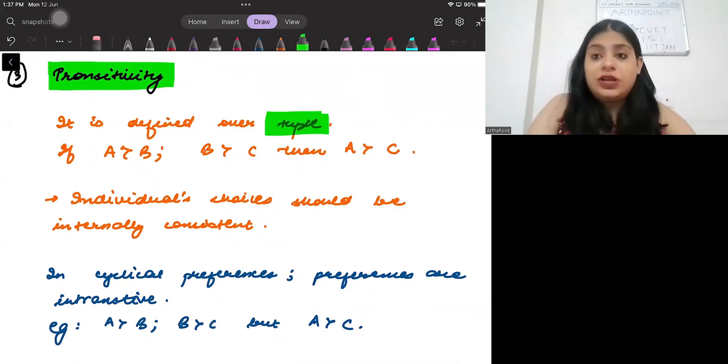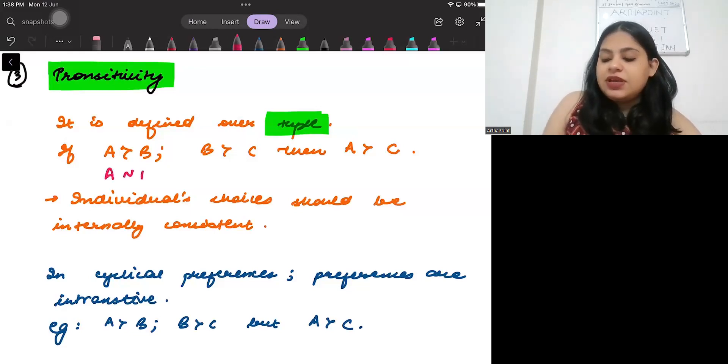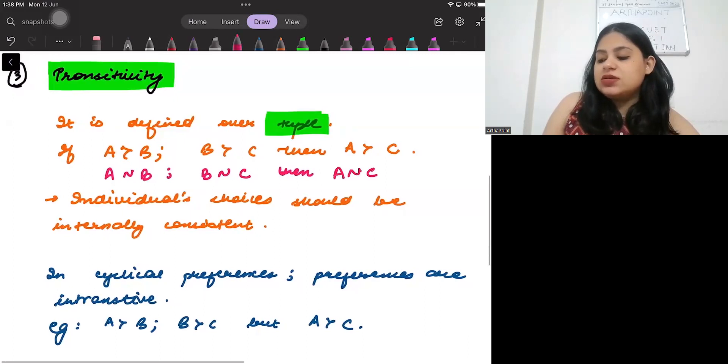If I prefer A over B and B over C, then I should be preferring A over C. This is called that individual choices are internally consistent. Our choices are internally consistent. We are following consistency. You can say this in indifference too. That if A and B I am indifferent and I am indifferent between B and C, then I should be indifferent between A and C. This is called being internally consistent.